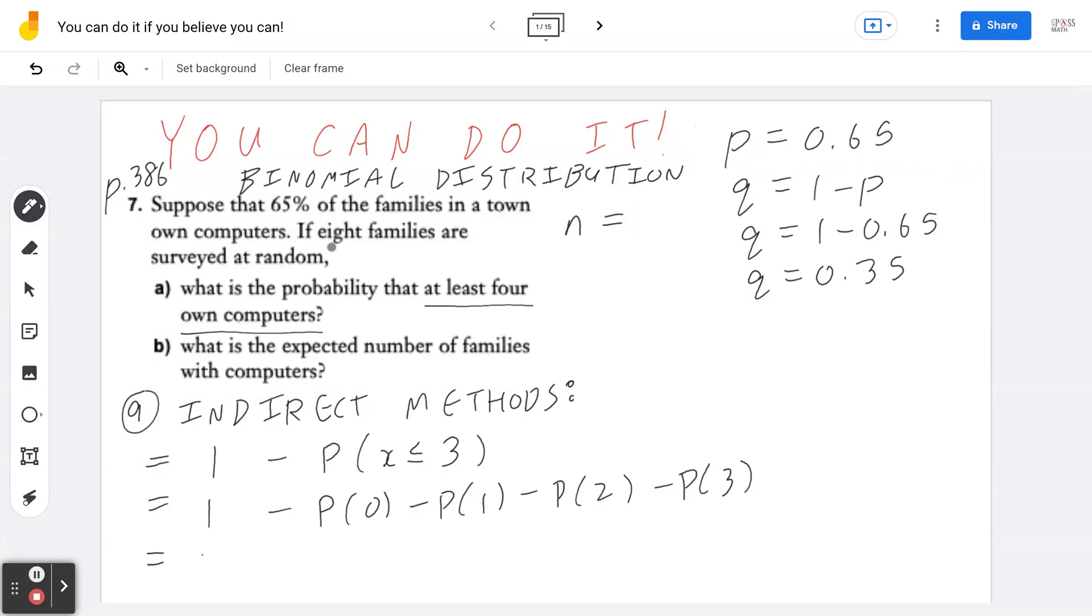Also, there are 8 families. So in this problem, n is going to be 8. What about x? It ranges from 0 to 3. So we're going to look at 0, 1, 2, 3 in a moment.